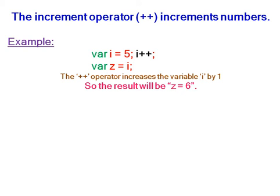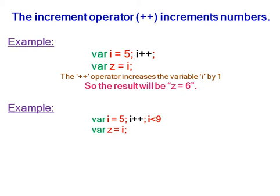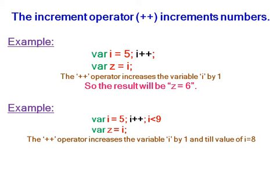The result will be z is equal to six. In this example, variable i is equal to five, i is incremented, and i is less than nine. Variable z is equal to i. The increment operator increases variable i by one until the value of i equals eight, as the condition is i less than nine.